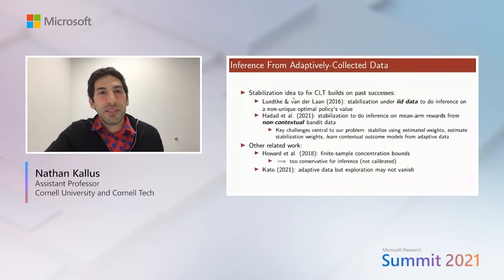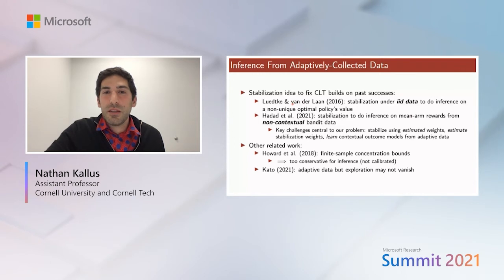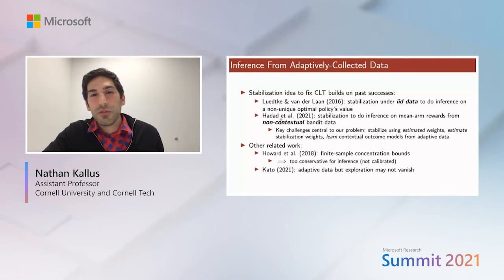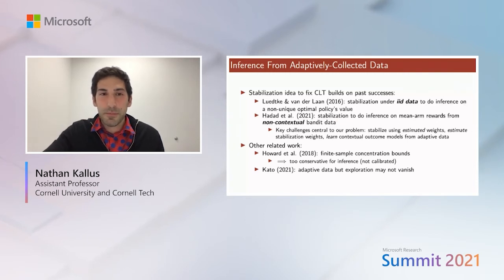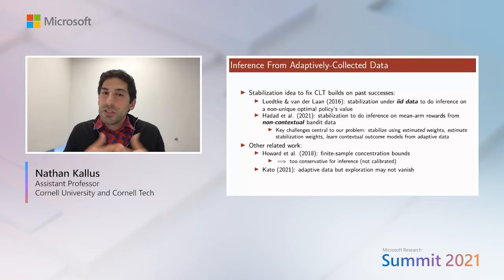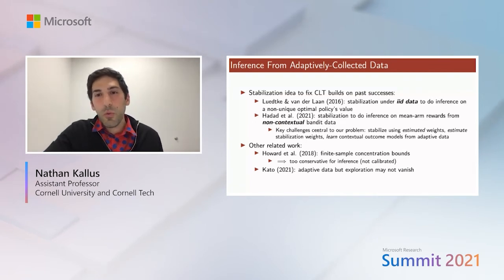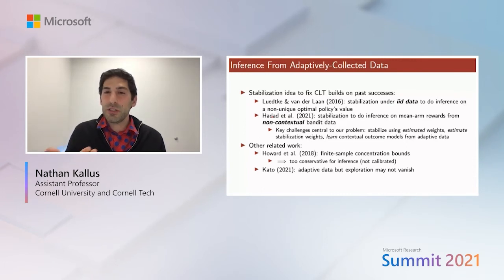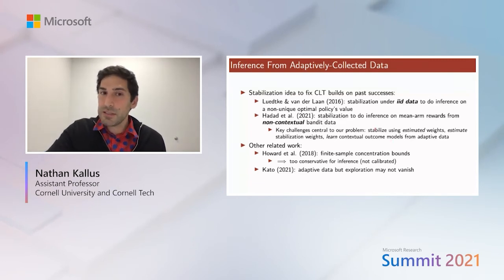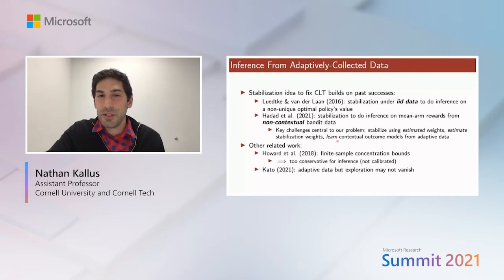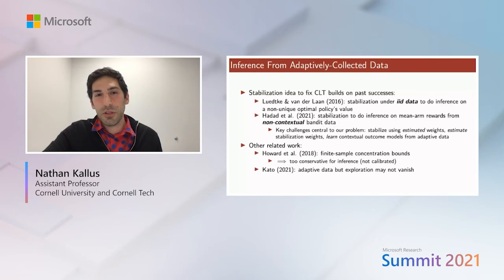This idea of stabilization to fix the CLT builds on past successes. Notably, Lutke and Van der Laan used stabilization in an IID setting for inference, and more recently Haddad et al. used stabilization for inference in a multi-armed bandit trial — a non-contextual setting. We're extending their idea to the contextual setting. Key challenges include that Haddad et al.'s stabilization weights were known, whereas here we must estimate them and ensure stabilization still works, and we must learn contextual outcome models from adaptive data.